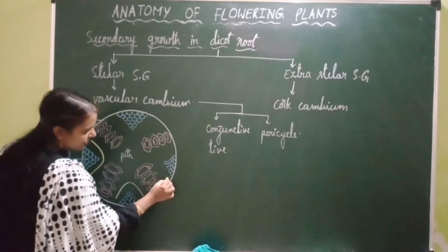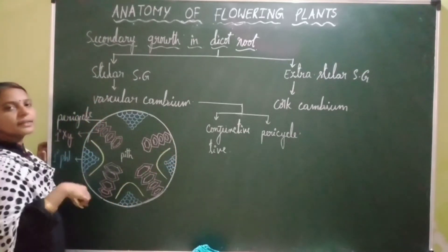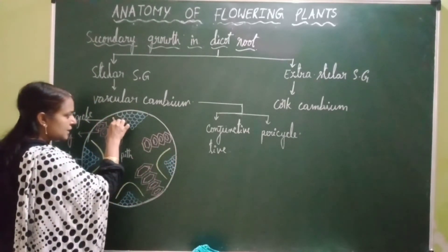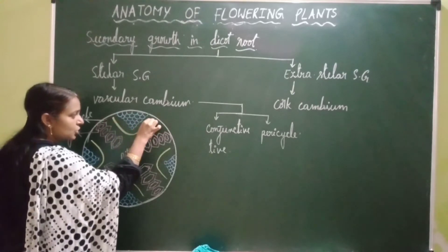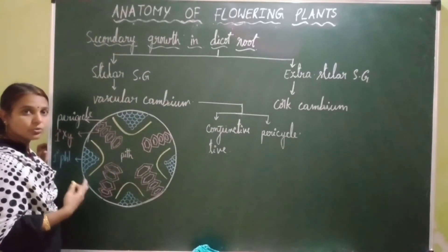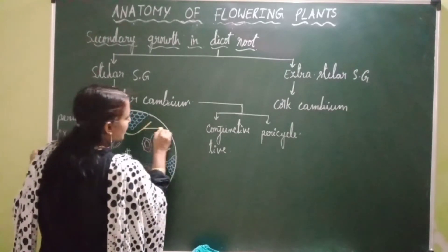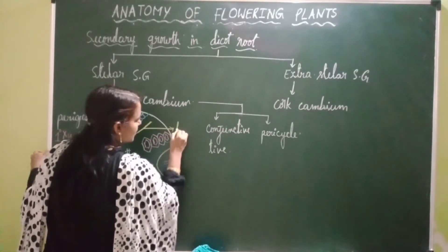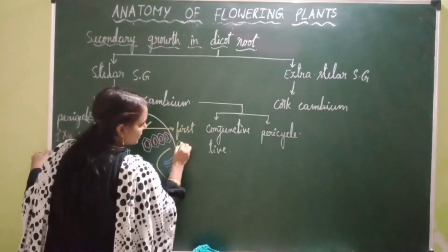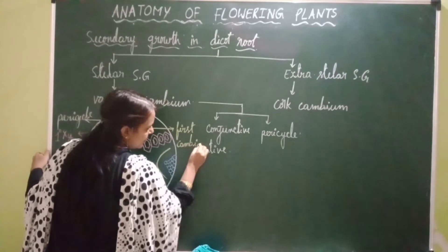De-differentiation means regaining the capacity of cell division. The parenchymatous cells present in the conjunctive tissue regain the capacity of cell division and get de-differentiated into cambial strips. These cambial strips are called first cambial strips.